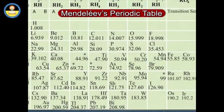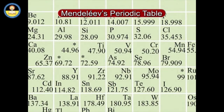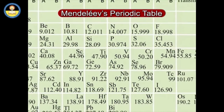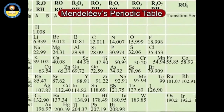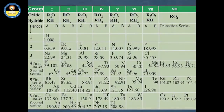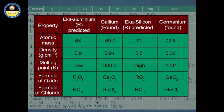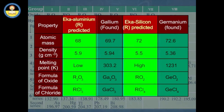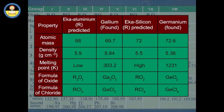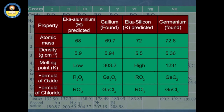Later on, these elements were discovered and Mendeleev's predictions were found to be remarkably correct. For example, the properties of eka-aluminum and eka-silicon as predicted by Mendeleev and those found by Winkler for gallium and germanium respectively are very similar, as shown on screen.